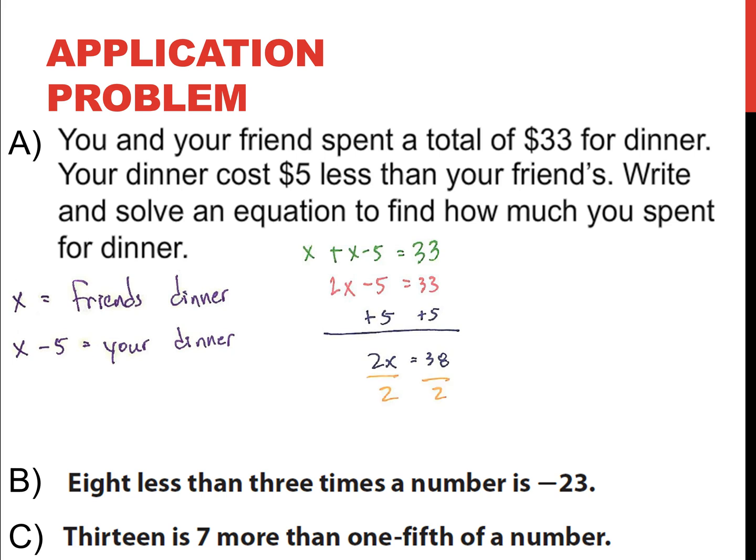Inverse of multiplication is division. So, I divide each side by 2, and x is equal to 38 divided by 2, and if you're screaming it at your TV or computer screen, you're right. x = 19.